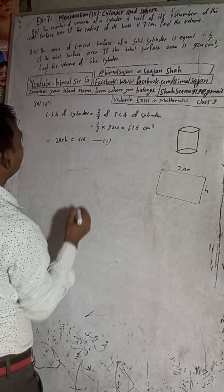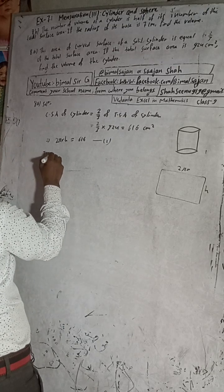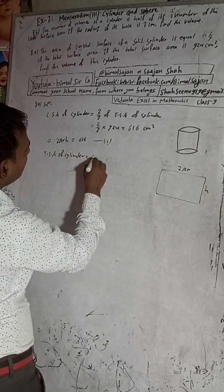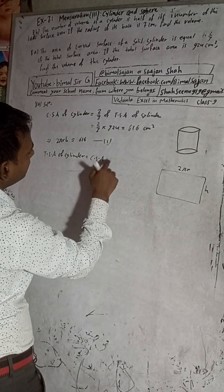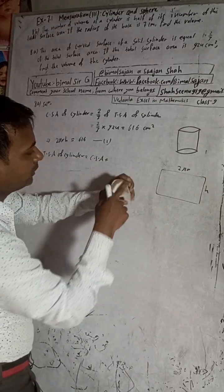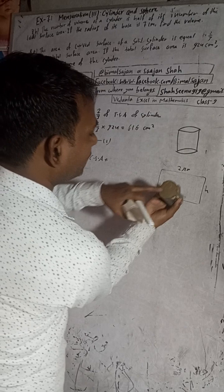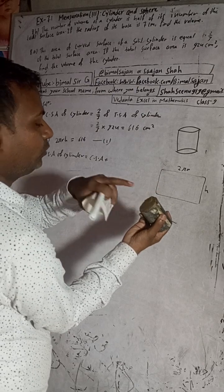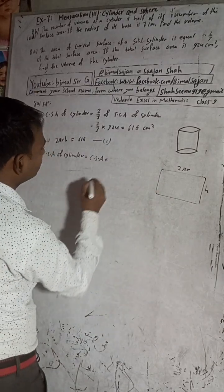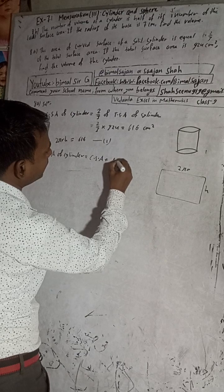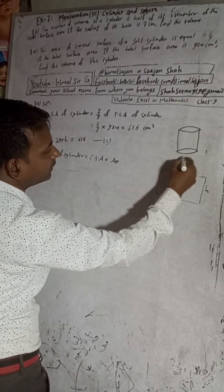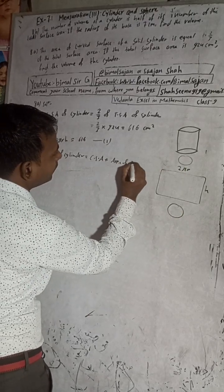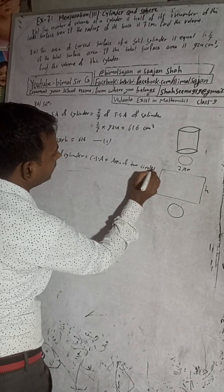The total surface area of a cylinder equals the curved surface area plus the area of the two circular ends. One circle has area πr², so two circles have area 2πr². Therefore: total surface area = curved surface area + 2πr².